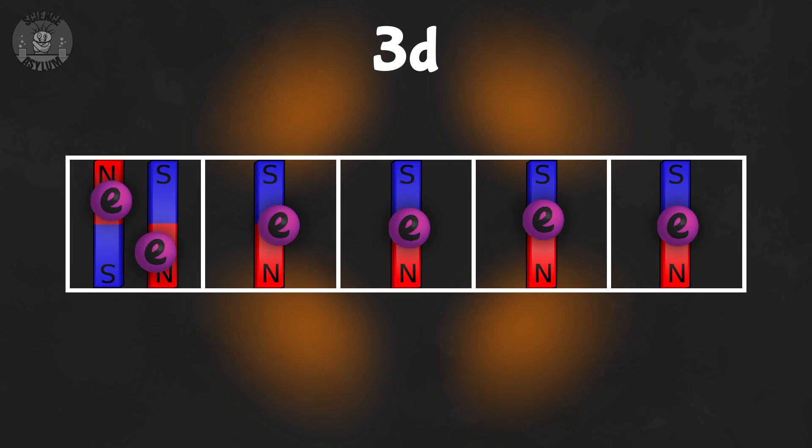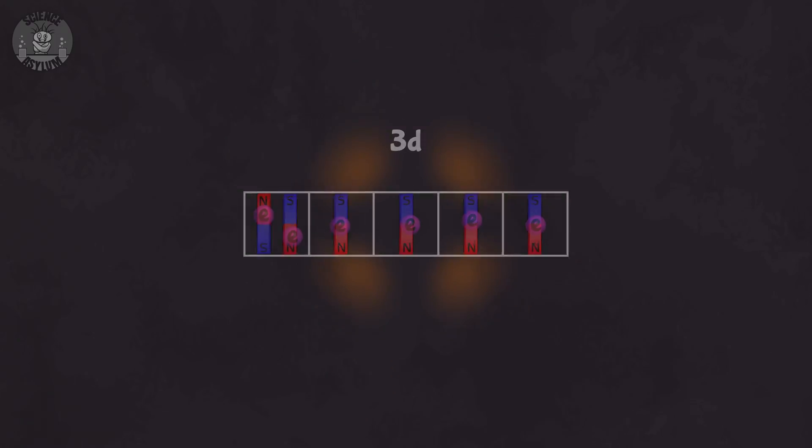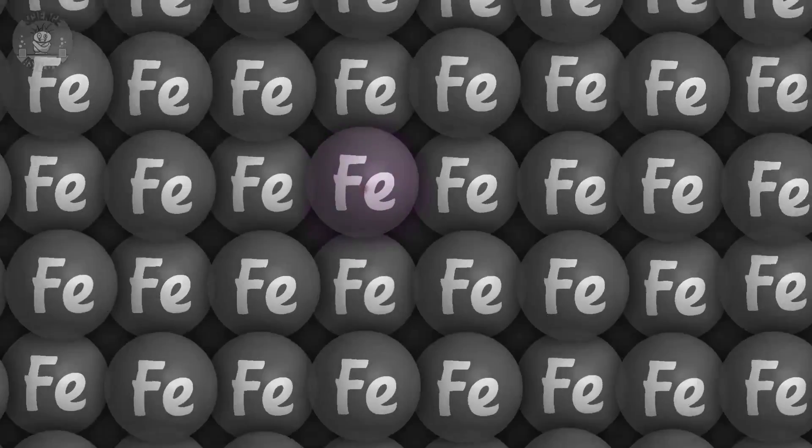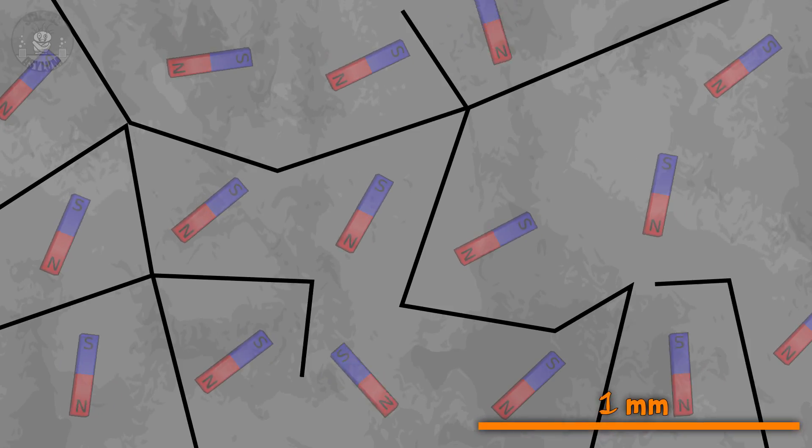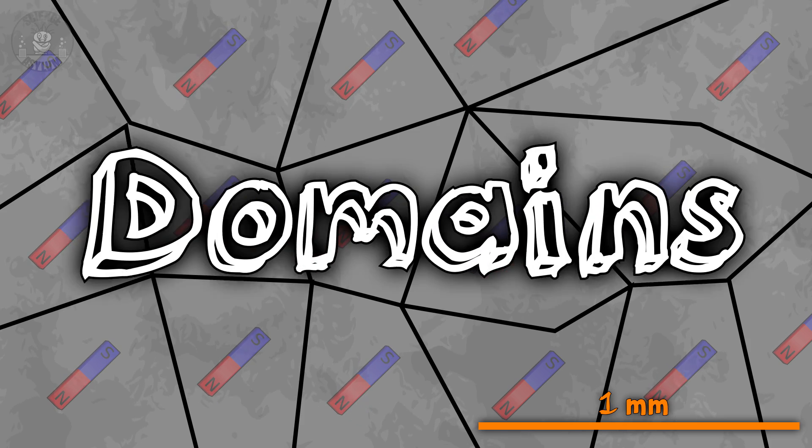Getting the loner electrons to line up isn't enough. You also have to get nearby atoms to line up with each other and then get enough regions of atoms to line up. We call those regions domains.